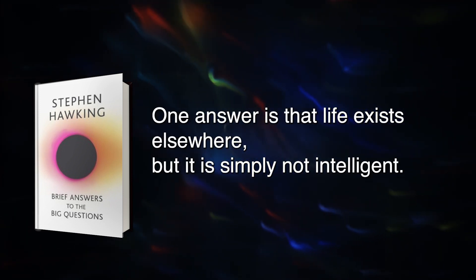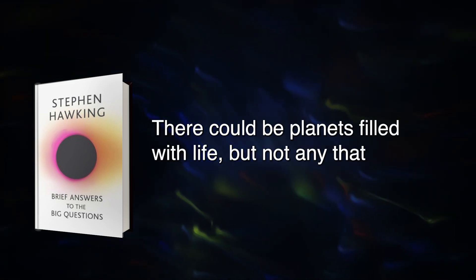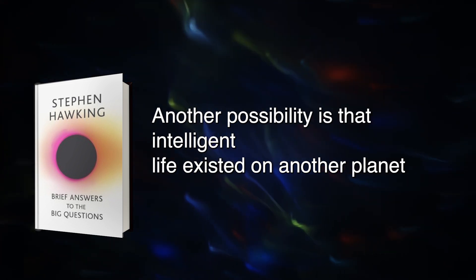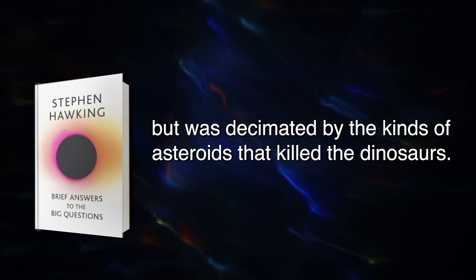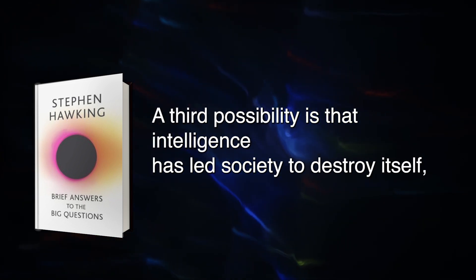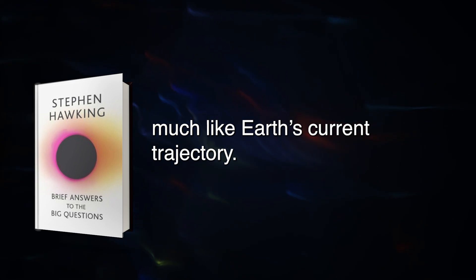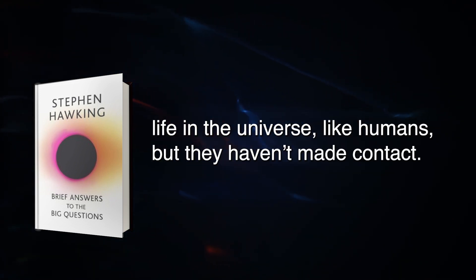One answer is that life exists elsewhere, but it is simply not intelligent. Intelligence is not a required part of evolution. There could be planets filled with life but not any that we could communicate with. Another possibility is that intelligent life existed on another planet but was decimated by the kinds of asteroids that killed the dinosaurs. A third possibility is that intelligence has led society to destroy itself, much like Earth's current trajectory. A fourth, more optimistic possibility is that there is another intelligent life in the universe like humans, but they haven't made contact.